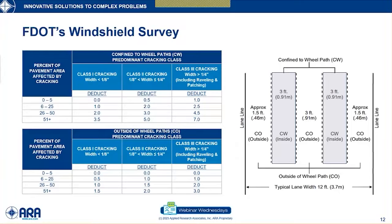For example, if we estimate 15% cracking inside the wheel pad and 3% outside the wheel pad with predominant class 3 cracking: 15% falls in the 6–25% range, yielding a deduct of 2.5. Three percent outside falls in the 0–5% range, yielding a deduct of zero. The crack rating is 10 minus 2.5 minus 0, equaling 7.5. Remember, 6.5 separates deficient from non-deficient.